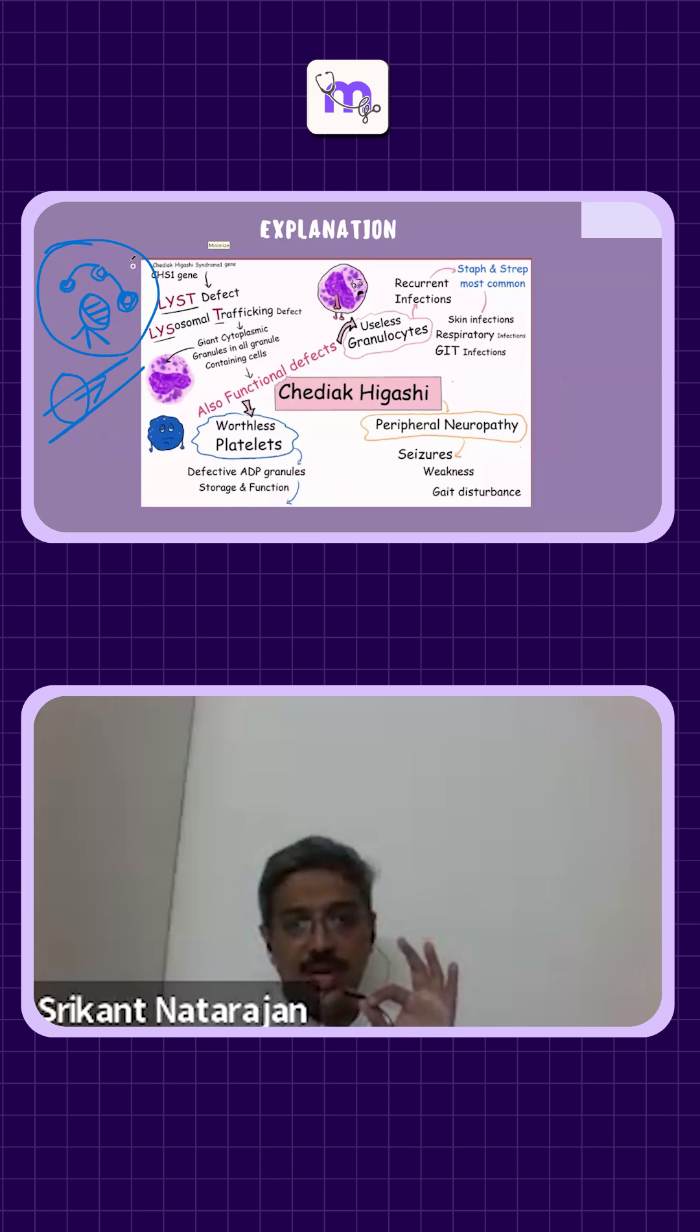So what exactly is happening? When this fellow has eaten up a bacteria, the train tracks all converge towards that organism. That movement, that lysosomal trafficking, that train track is not able to bring the organism to this particular grill.